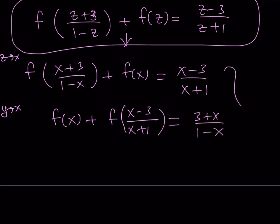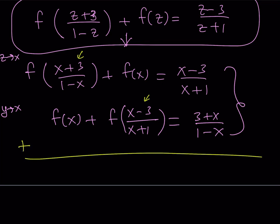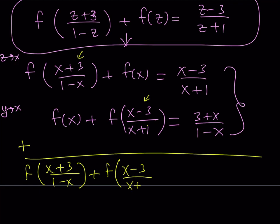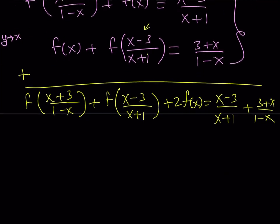Now I have a system of two equations both in x, and my goal is to find f of x. If I add these two equations, something interesting happens. The sum of f of (x plus 3) over (1 minus x) and f of (x minus 3) over (x plus 1) — those appear in the original problem and sum to x. Adding gives 2 f of x plus that sum equals the sum of the two right-hand sides. Since the sum of those two f terms equals x, this is exactly x.